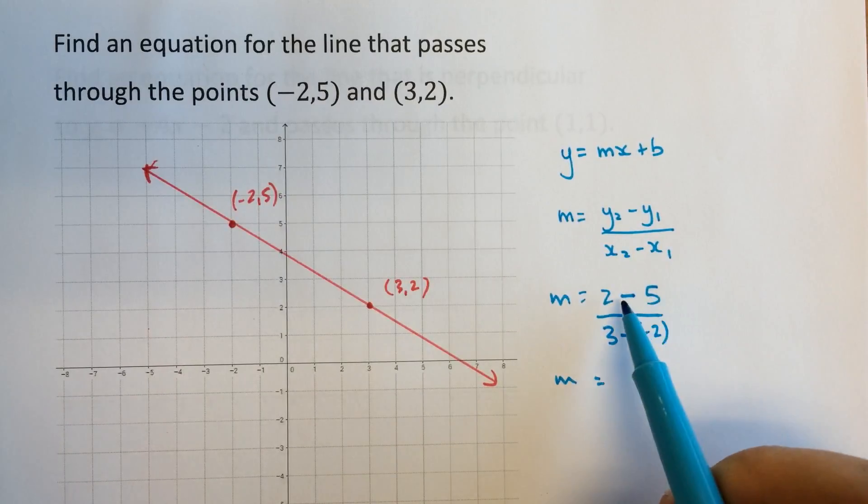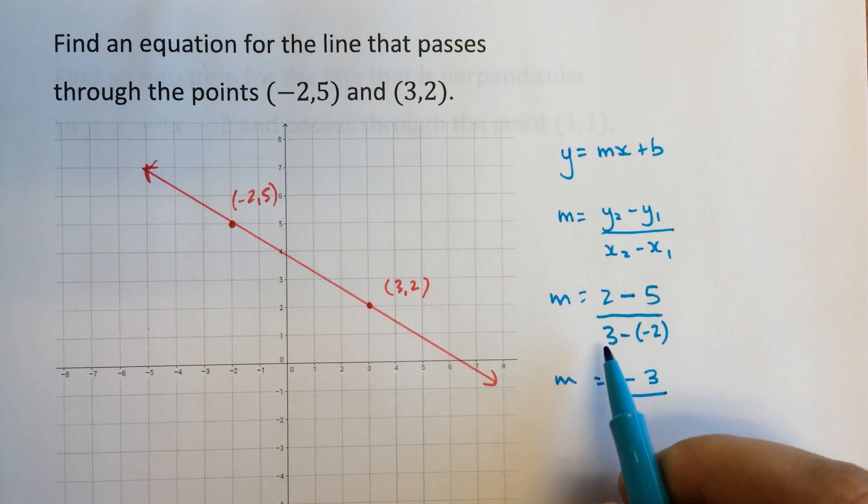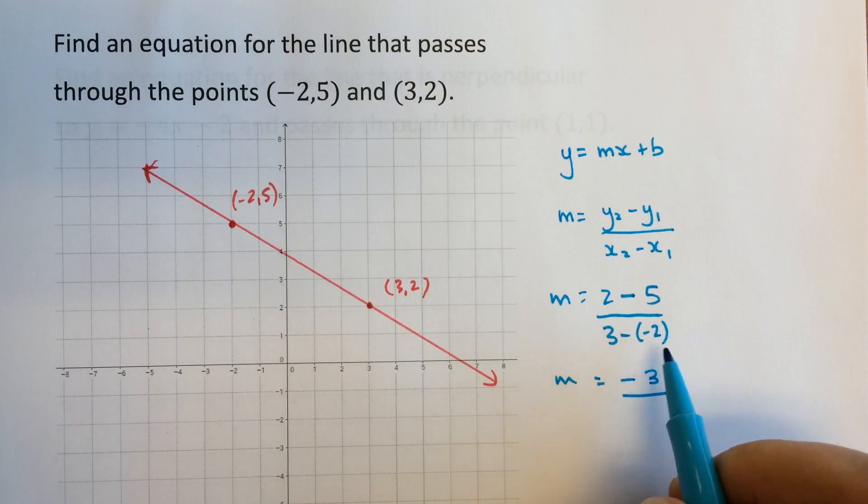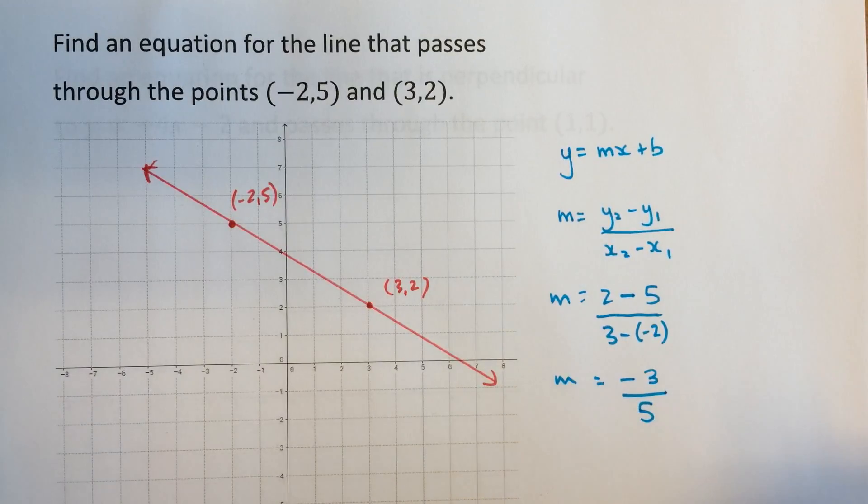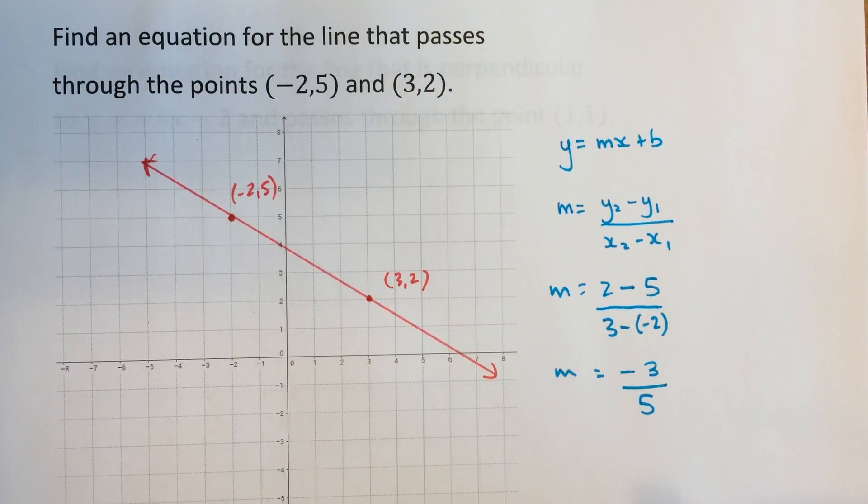This is our slope. 2 minus 5 is negative 3. And on the bottom, 3 minus negative 2 is the same as 3 plus 2. So that'll be 5. So my slope is negative 3 fifths.